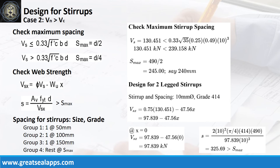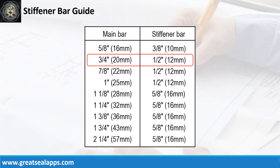The spacing of stirrups is as follows: one at 50 mm, one at 100 mm, one at 150 mm, rest at 240 mm. For 20 mm main bars, use 12 mm stiffener bars.